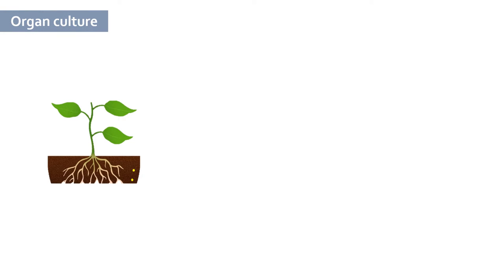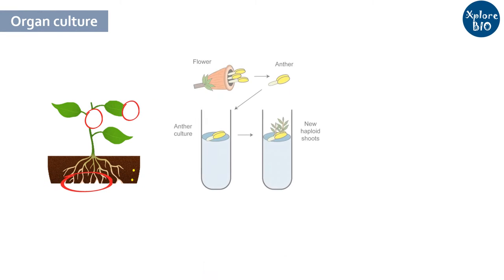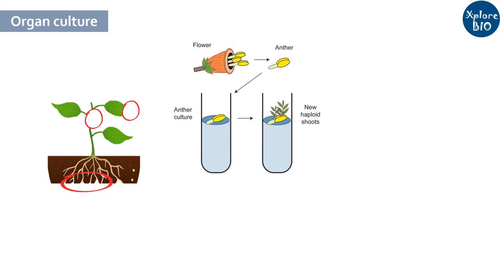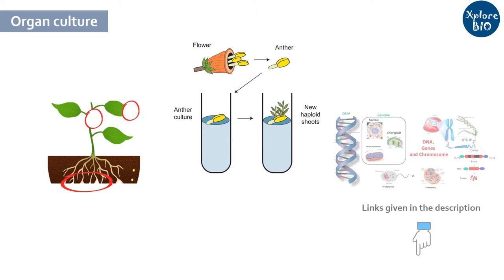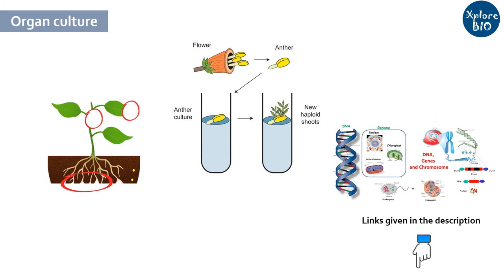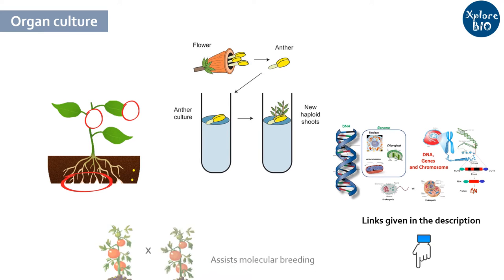For organ culture, plant organs like shoot, root, leaf, and anthers are used as explants. Anthers comprise a haploid genome and are suitable explants for development of haploid plants and double haploid plants that assist in molecular breeding.